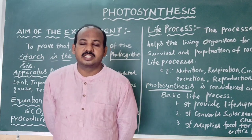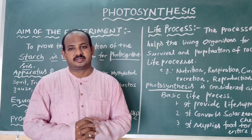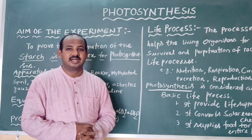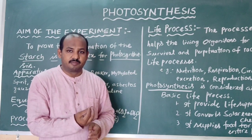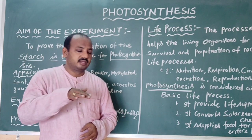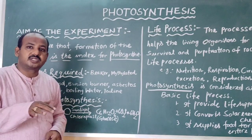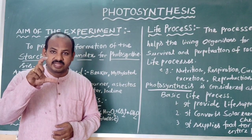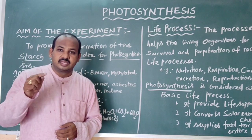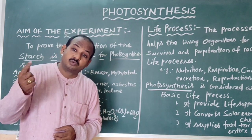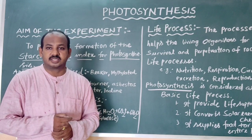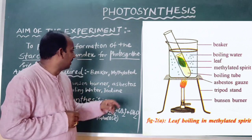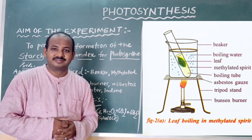Now the procedure. As shown in the picture, arrange all the apparatus. First, take a tripod stand and put a Bunsen burner under it. Place an asbestos gauze over the tripod stand, then place a beaker on it and add water to the beaker. Take a test tube and place a leaf from a potted plant that has been exposed to sunlight for more than 4–5 hours. Put the leaf in the test tube.